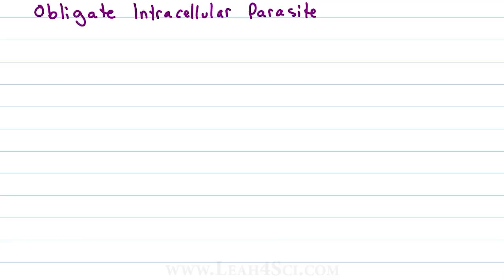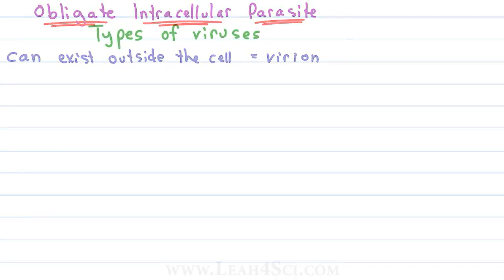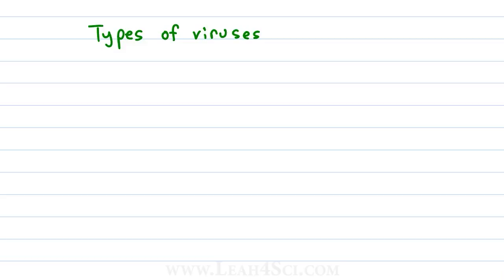Viruses are obligate intracellular parasites — that means they're parasites with an obligation to live inside a cell. If they're not in a cell, they can be destroyed. To be clear, they can exist outside the cell. In fact, a virus living outside a cell is called a virion. But unlike your music living in a USB, it can't exist for months, years, or even decades. If a virus is outside the cell too long or exposed to chemicals, heat, or other conditions, it is subject to destruction — because if it's not alive, it can't really die.